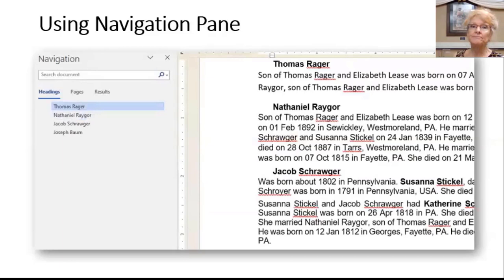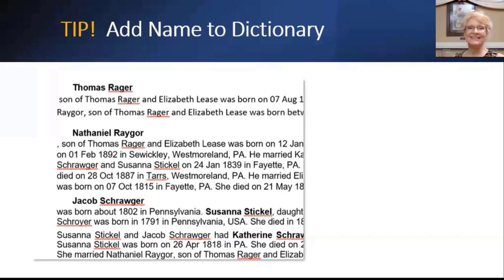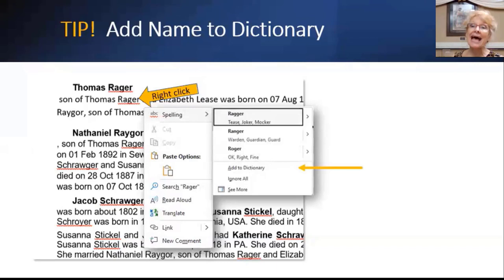Have you noticed all the red squiggly lines in this document? That's spell check working hard to keep you from making a mistake. If it is the correct family name, for example, right-click and under Spelling, click Add to Dictionary. It is now added to your entire Office spelling bucket for all the programs. Make sure it is correctly spelled first.